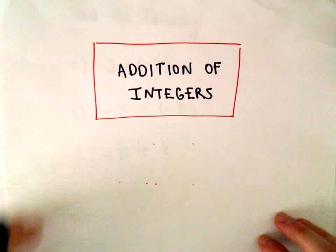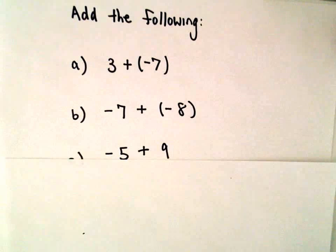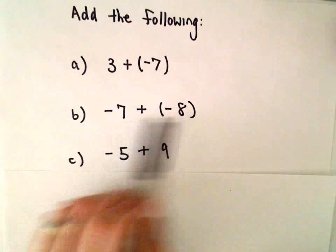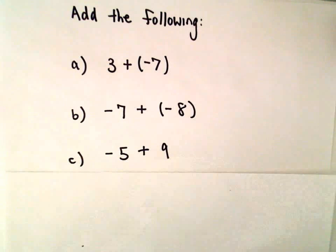Alright, so a few last examples here related to addition of integers. We're just going to add the following numbers: 3 plus negative 7, negative 7 plus negative 8, negative 5 plus 9.